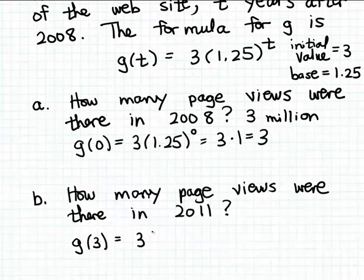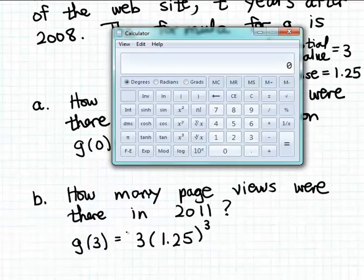So that's going to be 3 times 1.25 raised to the third power - of course we're just substituting our input 3 for elapsed years t in our formula for the function g. And so we just need to calculate now 3 times 1.25 cubed. Well, let me call up the calculator here to evaluate 1.25 cubed, although we could do that by hand - that's not too bad a calculation.